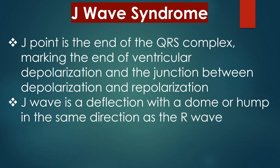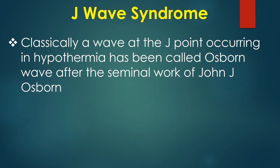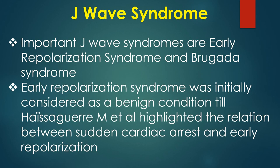The J point is the end of the QRS complex, marking the end of ventricular depolarization and the junction between depolarization and repolarization. A J wave is a deflection with a dome or hump in the same direction as the R wave. Classically, a wave at the J point occurring in hypothermia has been called the Osborne wave, after the seminal work of John J. Osborne. Important J wave syndromes are early repolarization syndrome and Brugada syndrome.